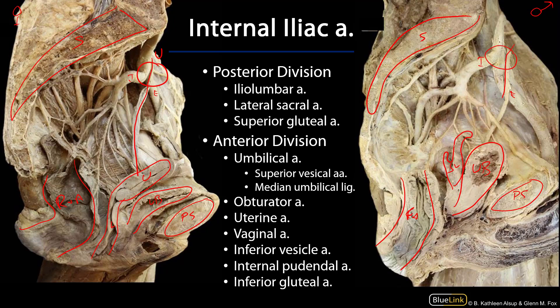Let's take a look at the major divisions of the internal iliac, of which there are two. Probably the most straightforward will be the posterior division. The posterior division supplies the body wall of the pelvis and hip through several branches.